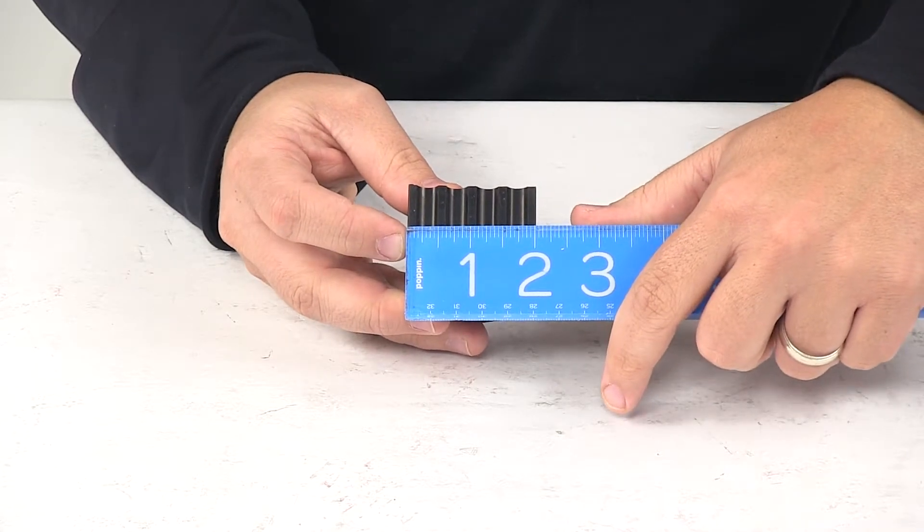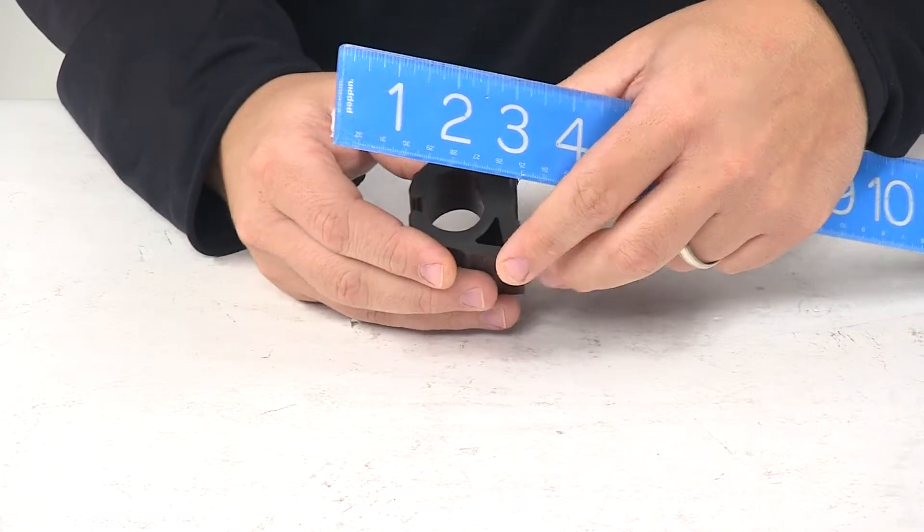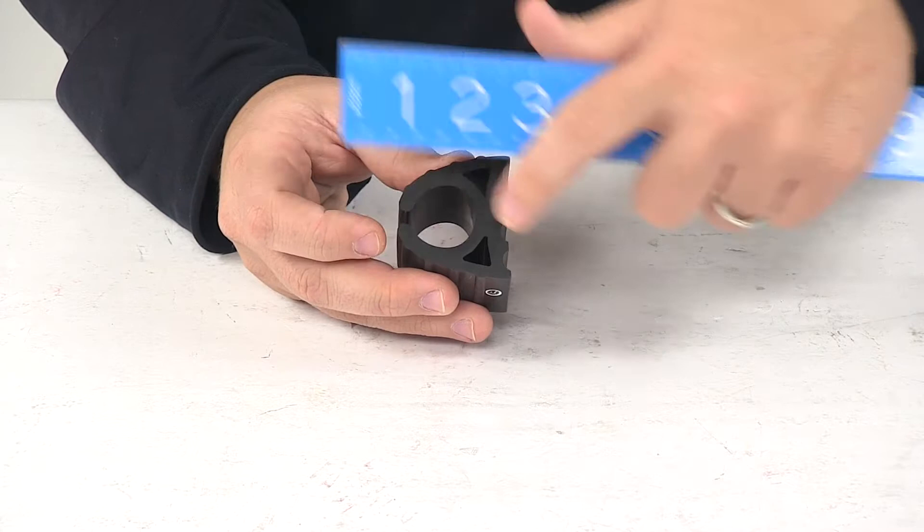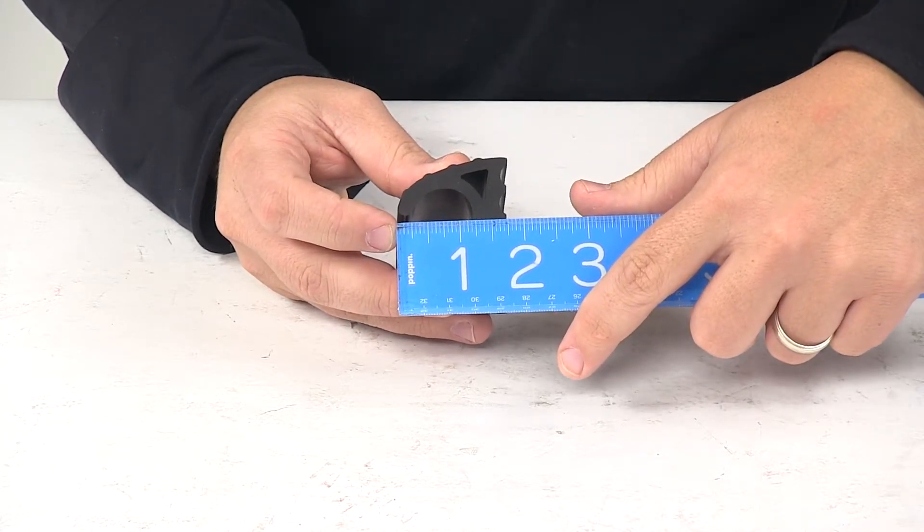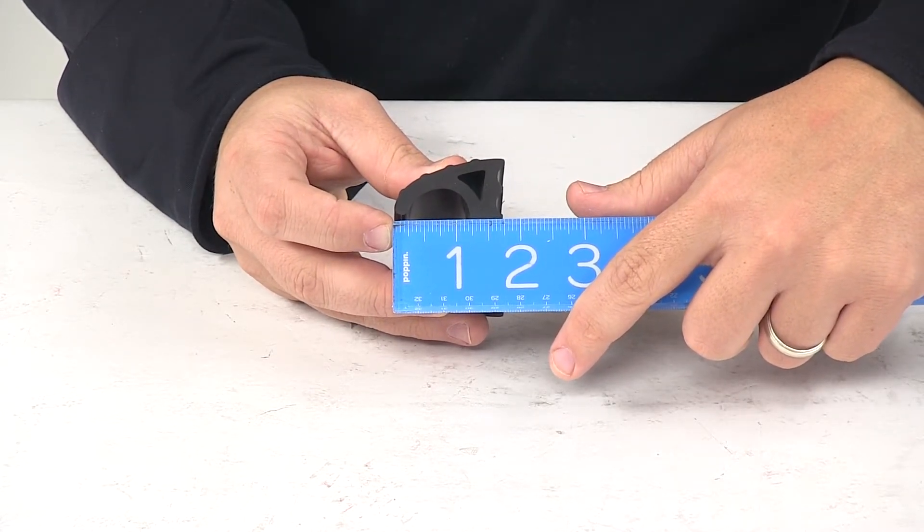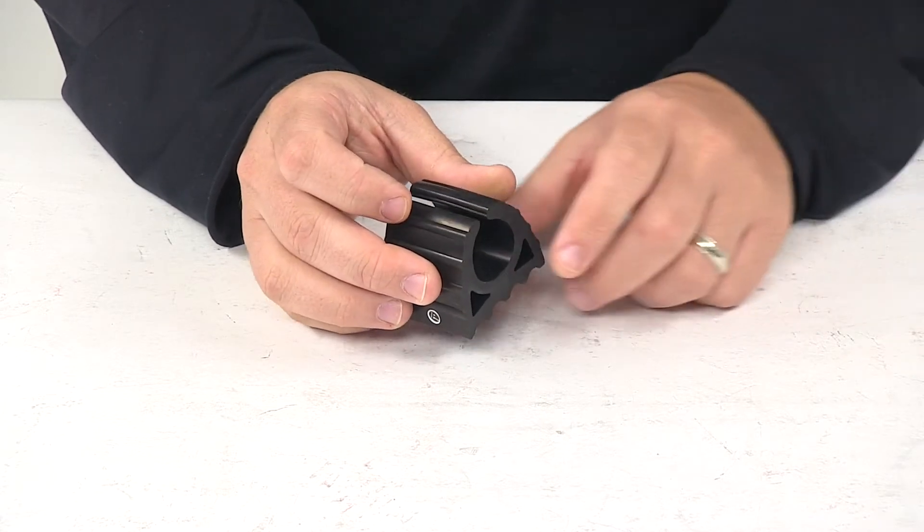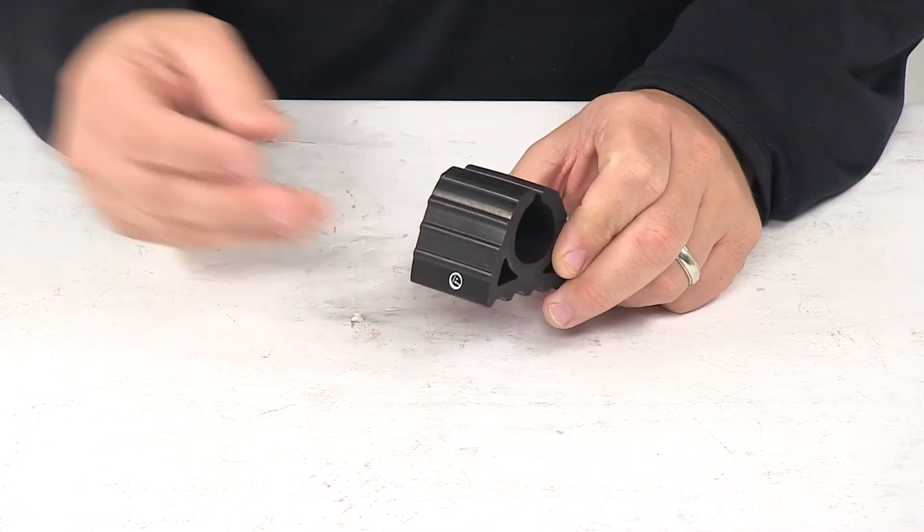Edge to edge going this direction is two inches and then from outermost point to outermost point gives us that depth measurement of about one and three quarter inches. That's going to do it for today's look at the replacement rubber spacer.